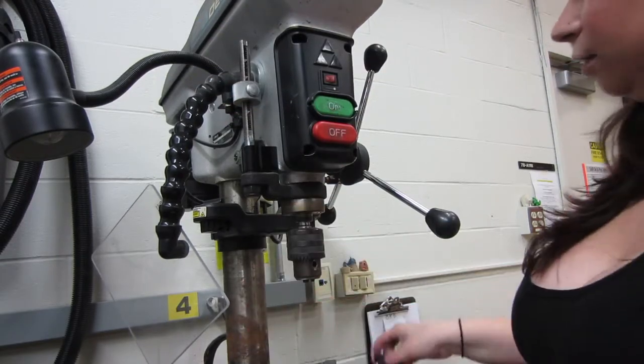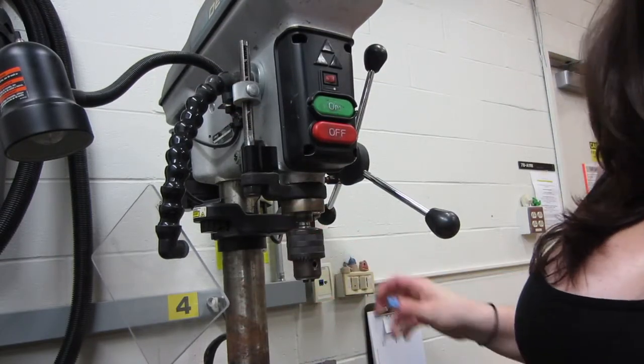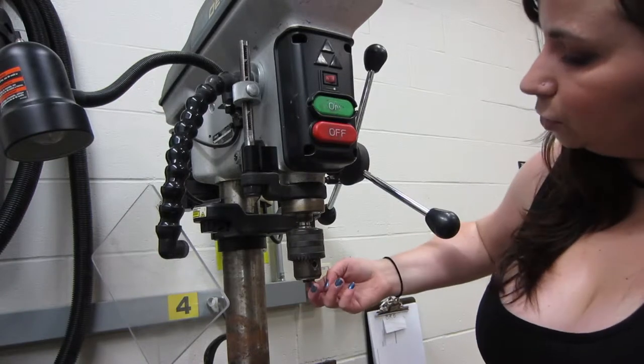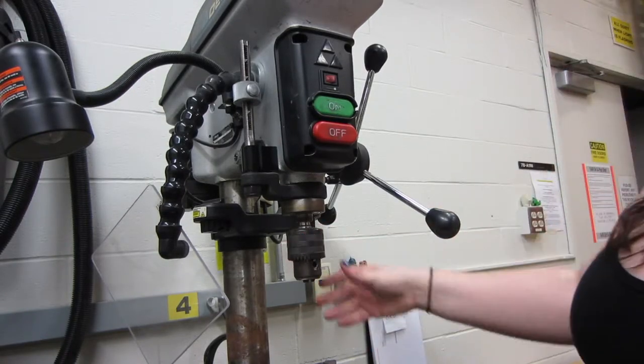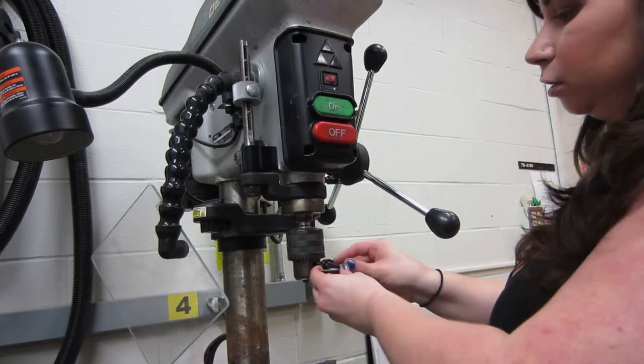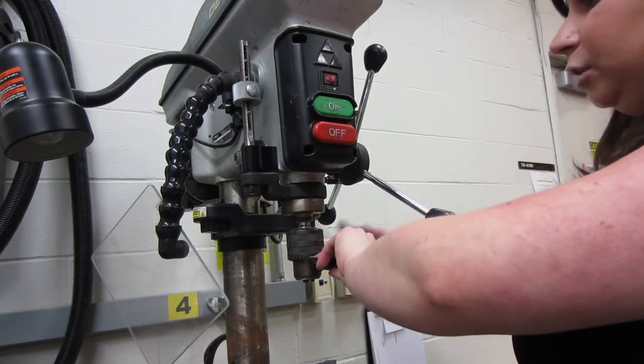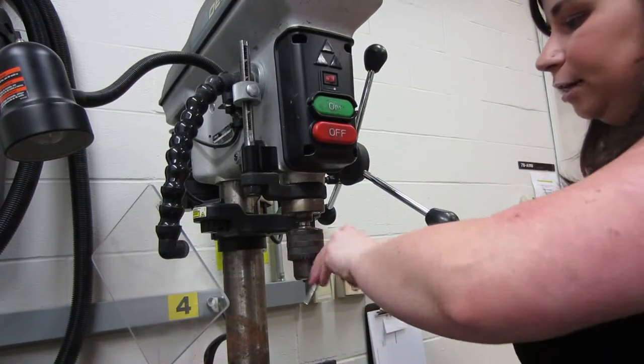And so here's the key that goes into—this is the chuck right here, just like you have on a power drill. And so it has those three teeth inside of it. Only the chuck here, it's a little bit harder to open and close, and it should be because it's got more power behind it than a power drill.